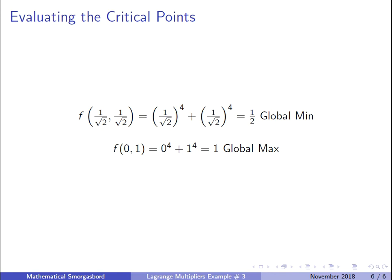That was the whole problem. To recap: we took our three equations and factored them, set each factor equal to zero, and checked all four cases. Once we had all the critical points, we evaluated them to find the global minimum and global maximum. Hopefully this made sense — if you have any questions, leave them below, and thanks for watching.